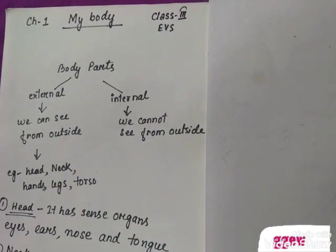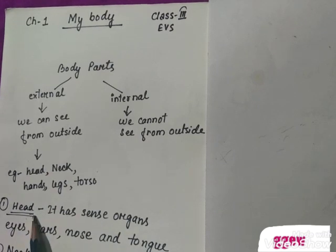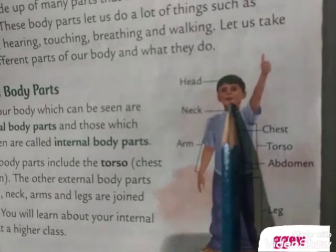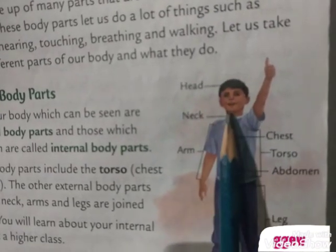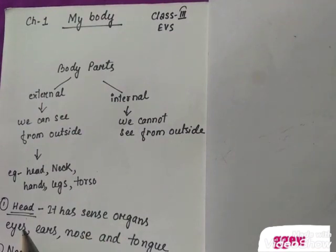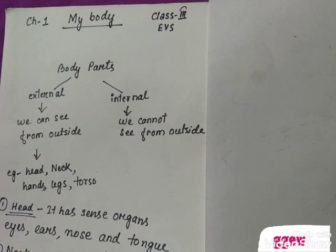Now we will discuss in detail about the external body parts. First is the head. Head is the part of the body above the neck, as shown in the picture here. The head has sense organs like eyes, ears, nose, and tongue. So in our head we have four sense organs.